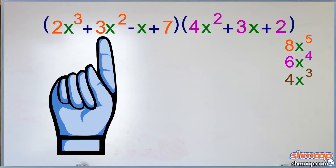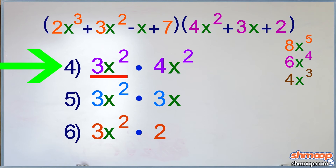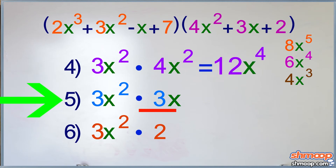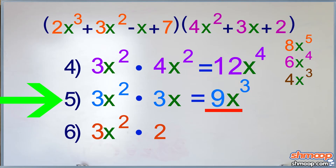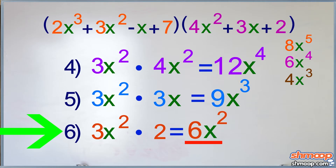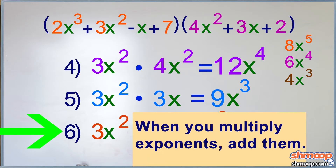Then we move on to the second term in the first polynomial and do the same thing. So 3x squared times 4x squared is 12x to the fourth. 3x squared times 3x is 9x to the third. And 3x squared times 2 is 6x squared. Remember, when you see an x, that's x to the 1. When you're multiplying exponents, you add them.